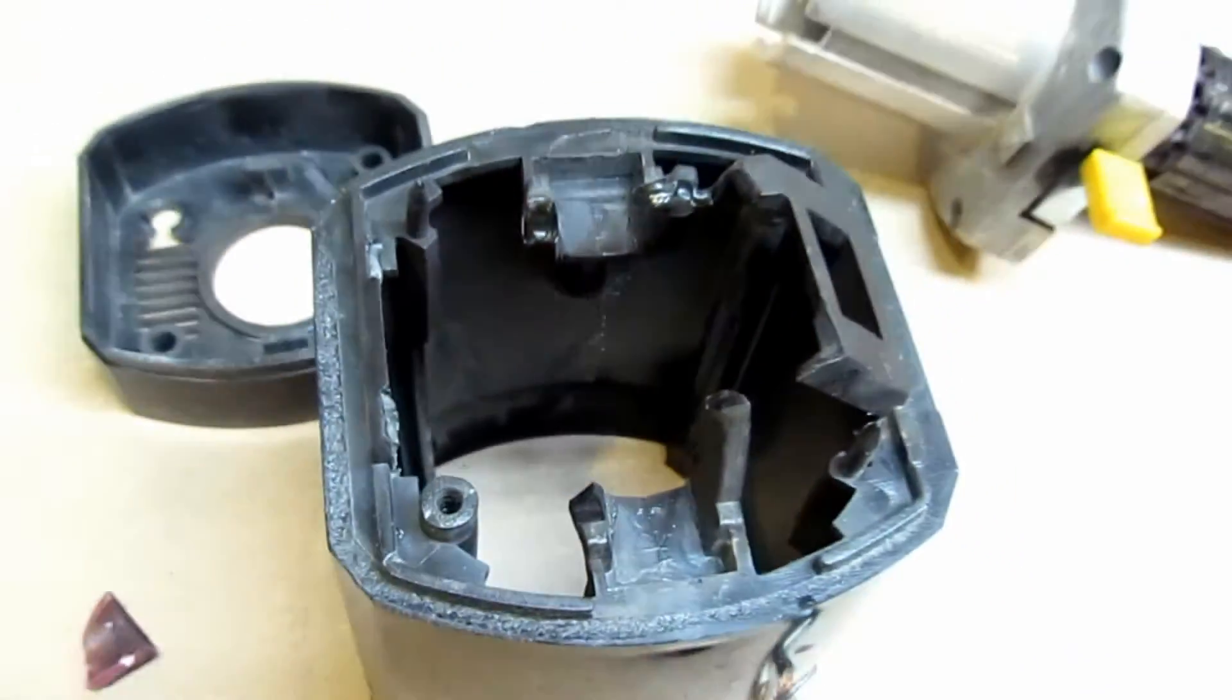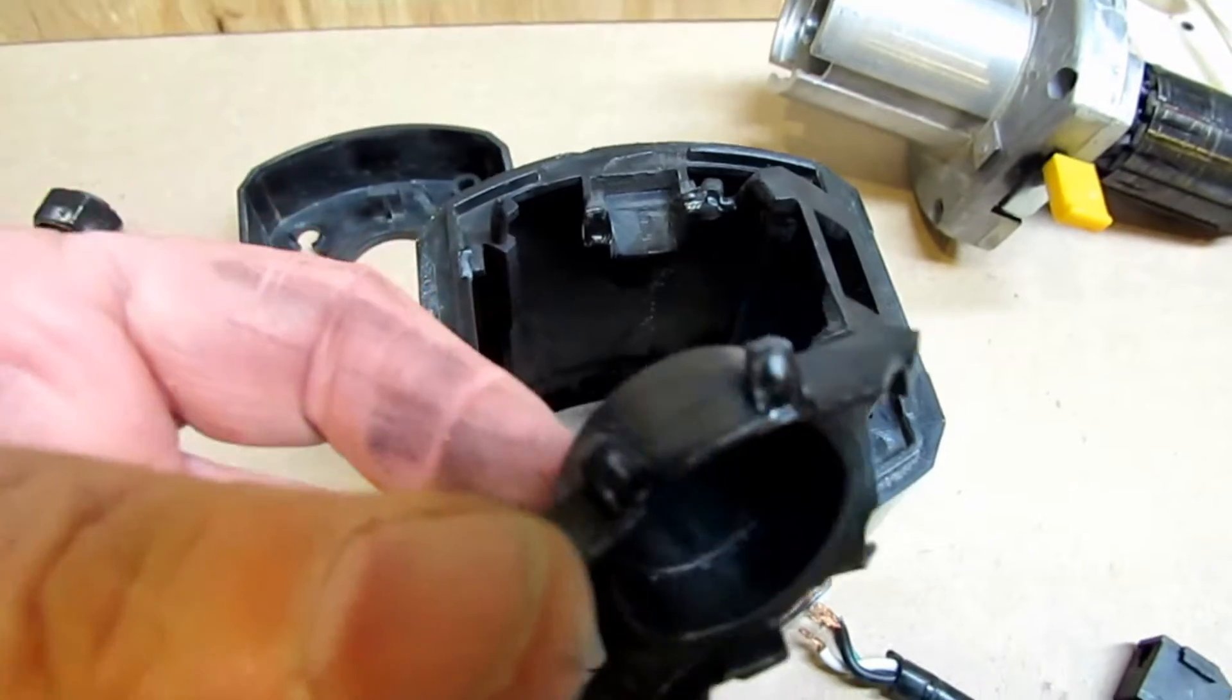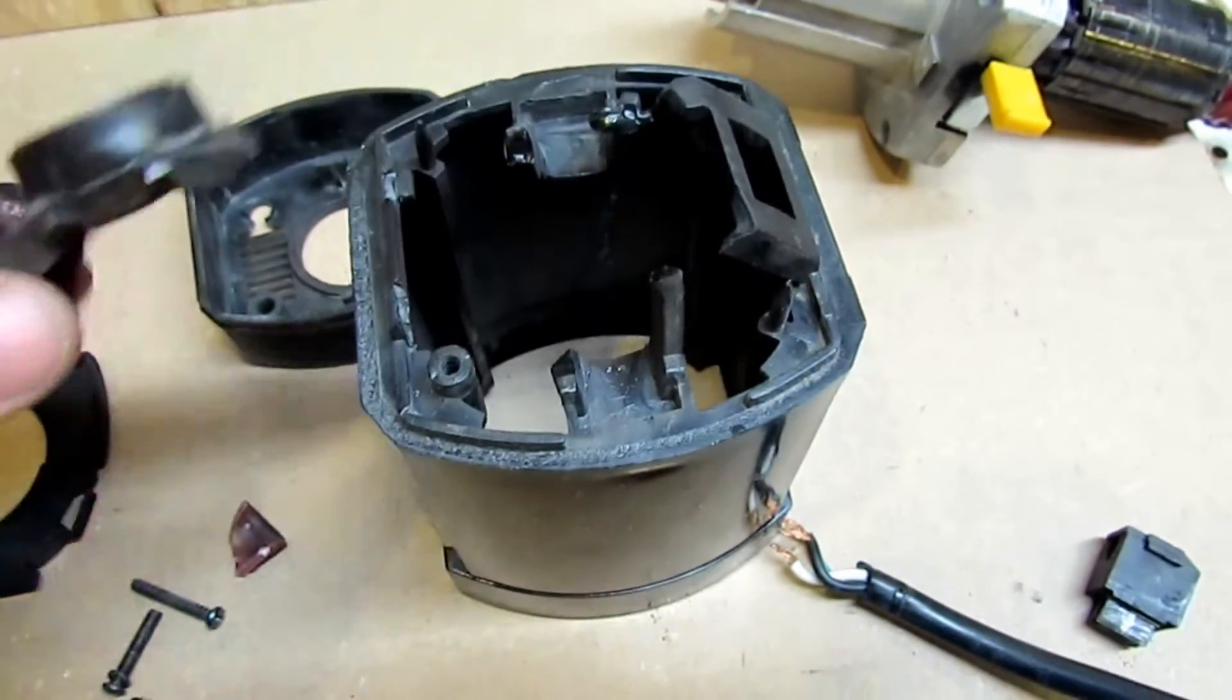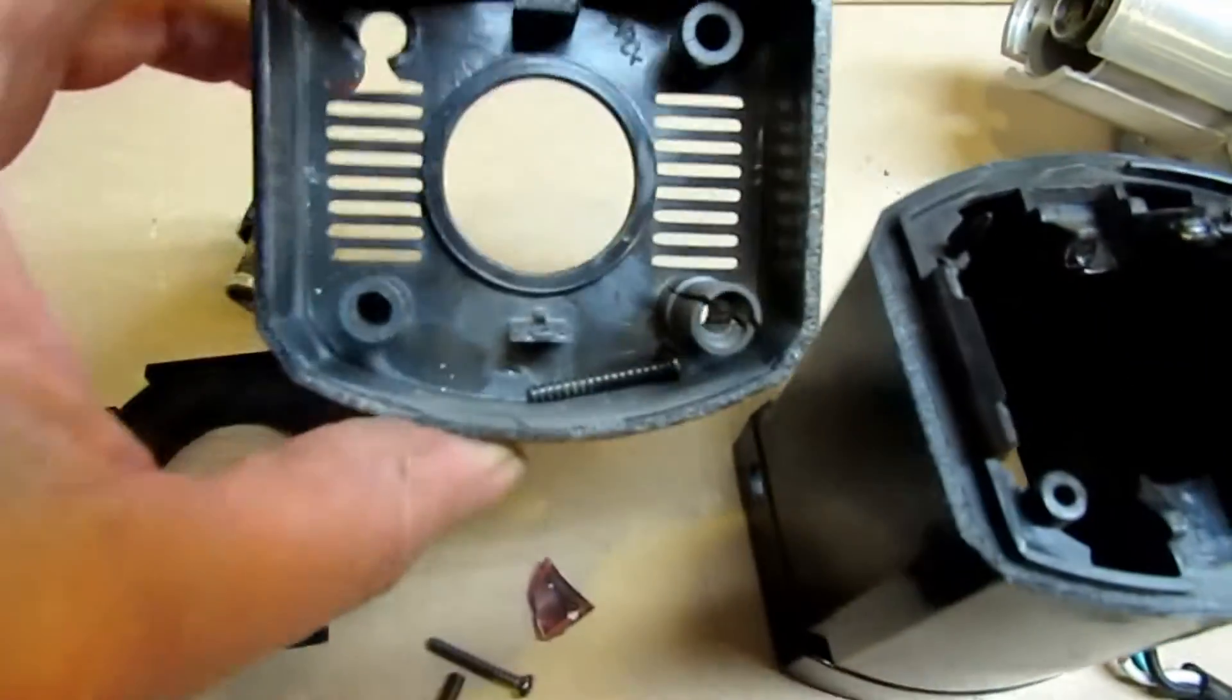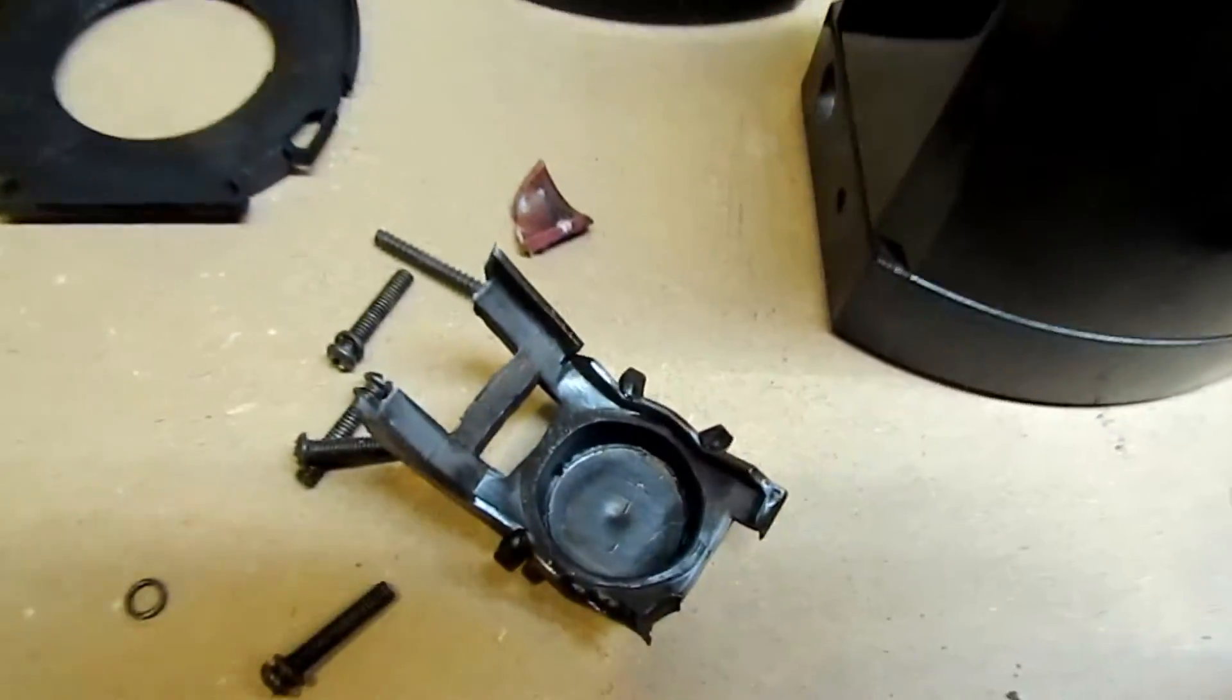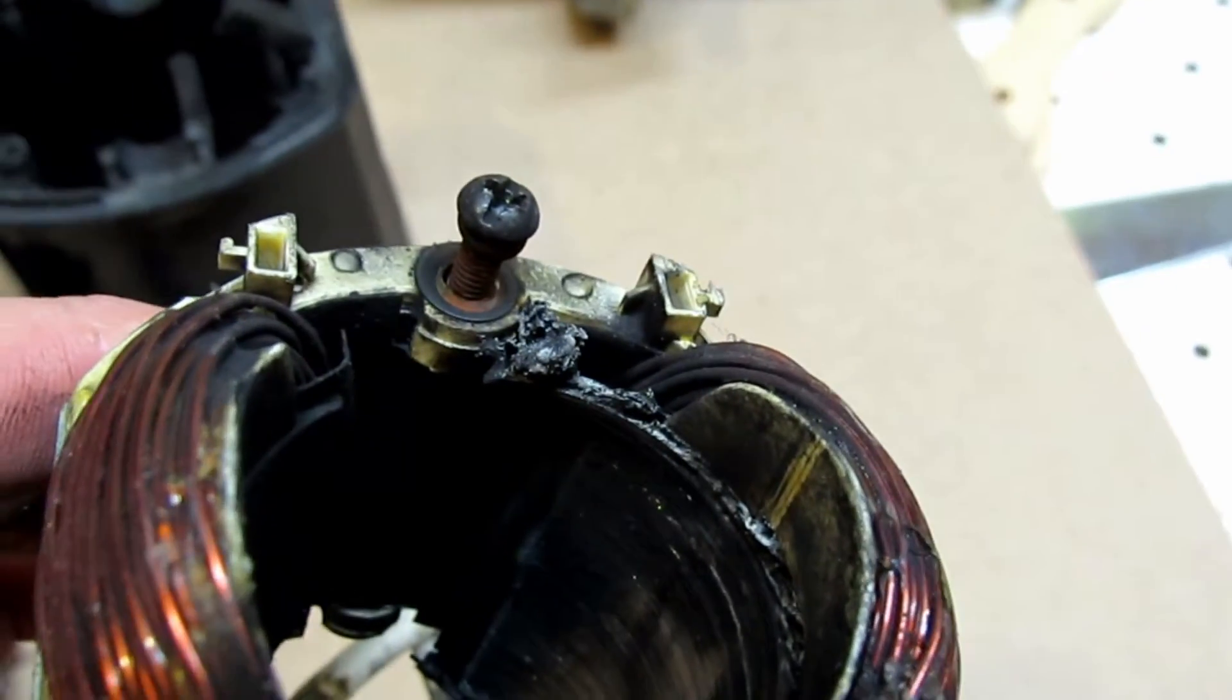There you see the housing on it. The bearing mount on the back actually cracked and broke, and it also mounted the brushes, and more of it broke apart there. So you can just imagine what it looked like when that thing went up.